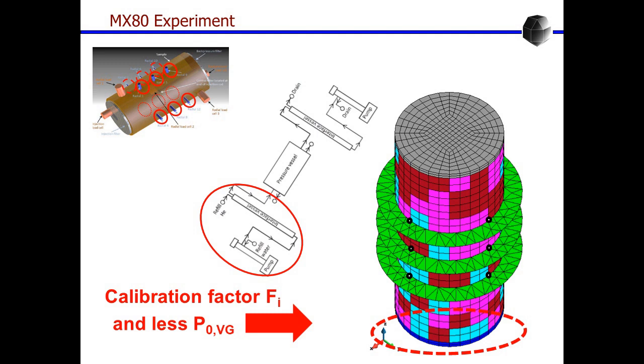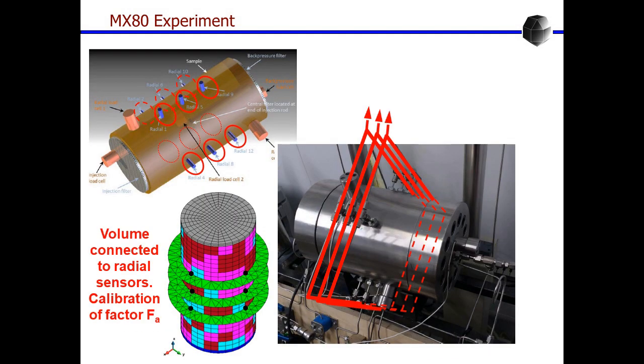This picture shows that there are some sensors that are connected through pipes and then this represents a volume that is attached to the sample. This has to be considered to produce a correct modeling.